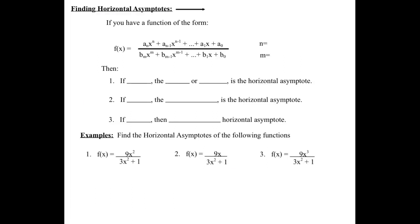We're going to jump around a little bit. We're going to start with horizontal asymptotes. When you are finding a horizontal asymptote, make sure you put it in equation format — your answer should be y equals some number. All horizontal asymptotes are going to be y equals something. All vertical asymptotes will be x equals something. It's a vertical and horizontal line.